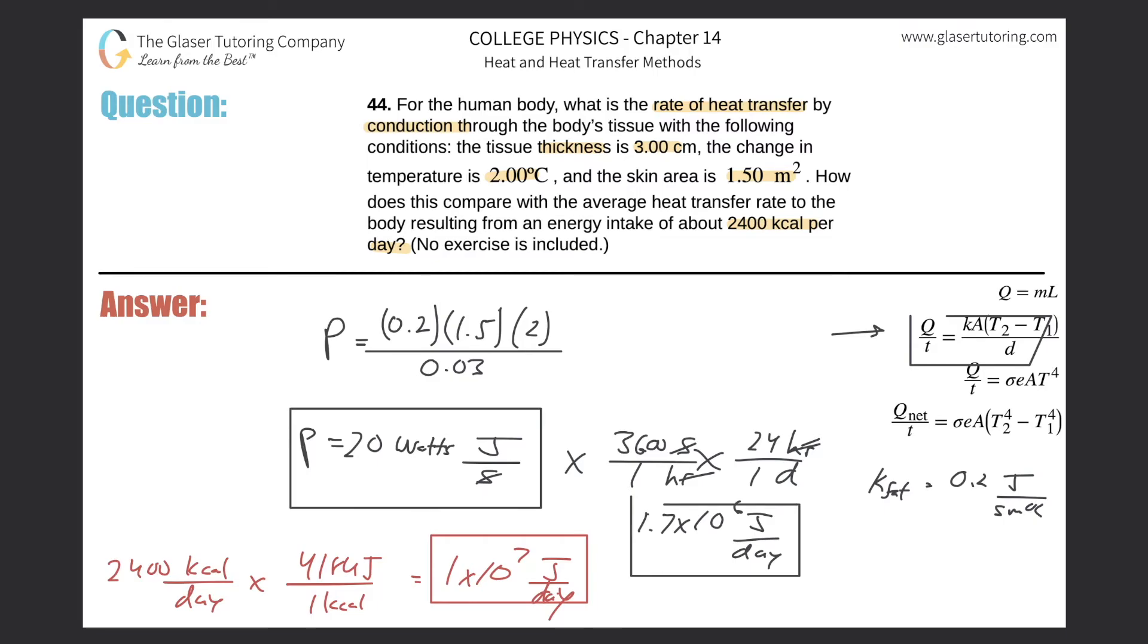Well, it appears that the amount of energy that we're taking in per day versus this amount that we are transferring via conduction... So you can do a division: 1 times 10 to the 7 divided by 1.7 times 10 to the 6. So we consume about on average 5.8 times more energy.